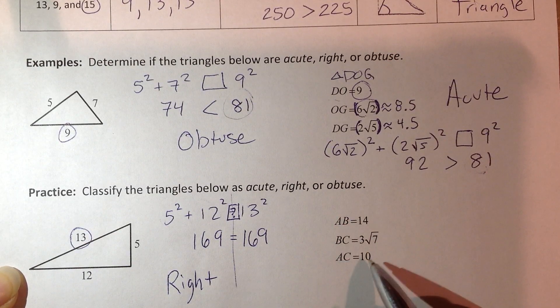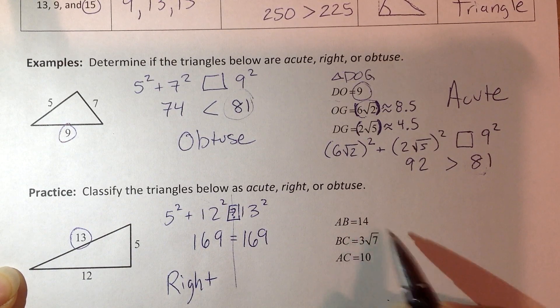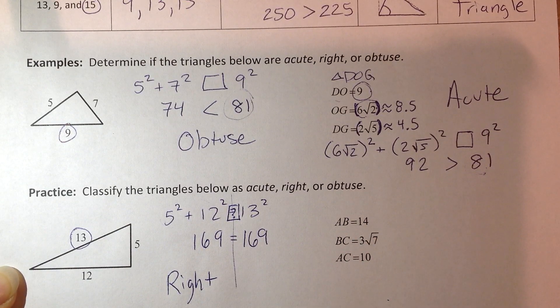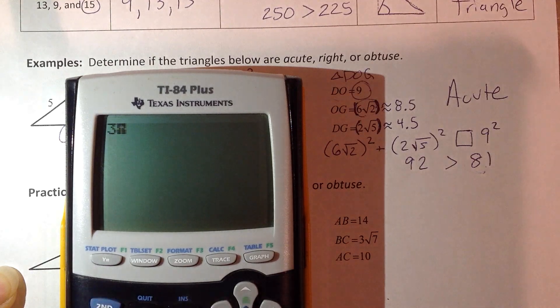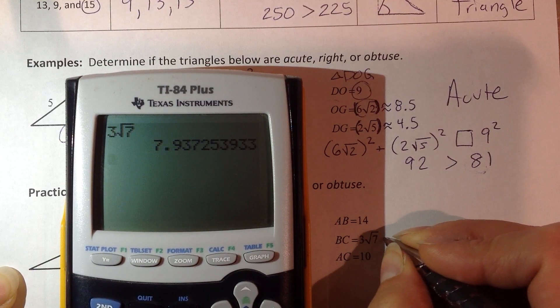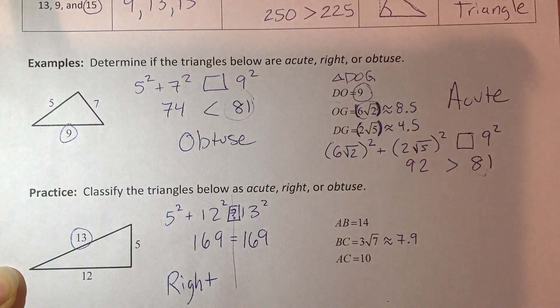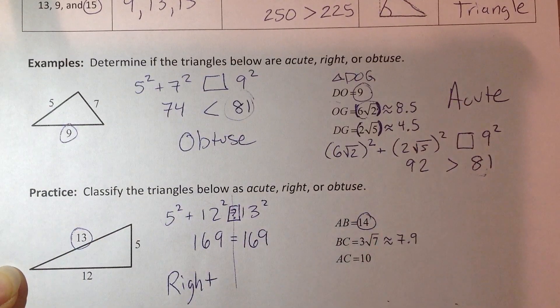Again, in this second example here, I don't know what 3 square root of 7 is. Is it the longest side? Is it the shortest side? I don't know. Let's ask the calculator. 3 square root of 7. So it turns out to be the shortest side, about 7.9. So my longest side, 14.